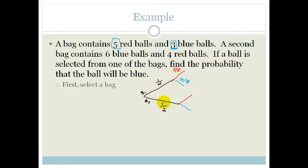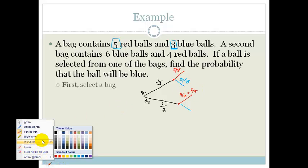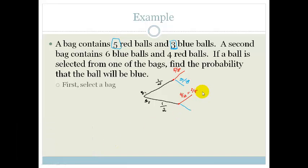Now looking at the second bag — it contains six blue balls and four red balls, so ten balls in total. Therefore, the probability of pulling out a red ball is four out of ten, which is the same as two fifths. The probability of pulling out a blue ball is six out of ten, which is three fifths.